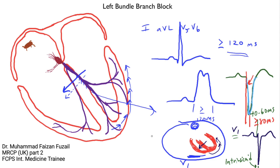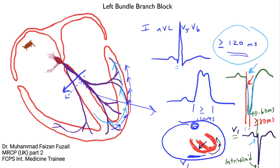So you have a wide QRS, loss of the septal cues in the lateral leads, usually a loss of the R wave in V1 where you have just a QS pattern — although sometimes you can get a little tiny R wave there — and then delay of the intrinsicoid deflection in the anterior precordial leads. So those are the criteria.